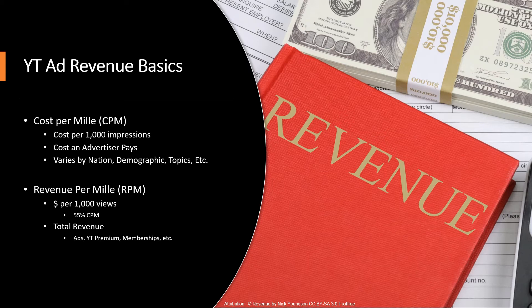Now from there you get the revenue per mil or the RPM. This is what the creator actually receives in terms of money per 1,000 views. Now they get a 55% share in the CPM — YouTube takes the other 45%. RPM is a holistic metric, so this also includes YouTube Premium views who do not see ads, channel memberships, and any other kind of method that they use on the channel to monetize like live streams, donations, etc.